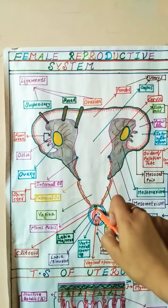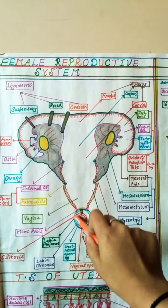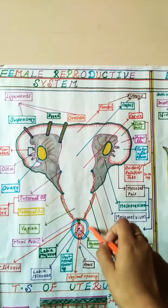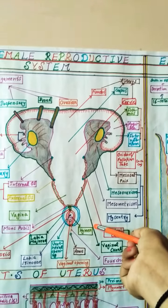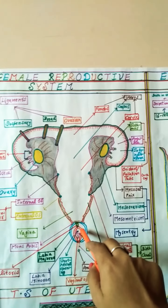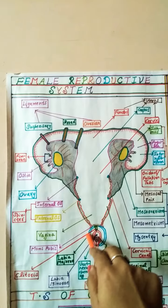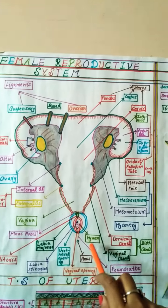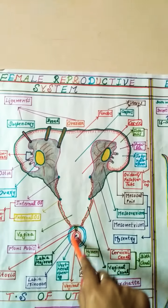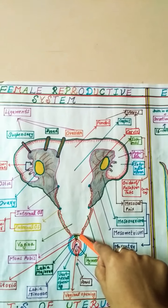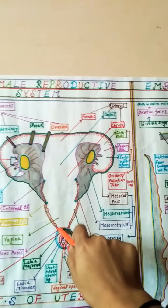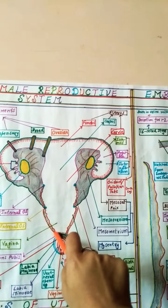The vaginal opening is called the vulva. The structure guarding the vaginal opening is called the pudendum or external genitalia. The vulva consists of the labia majora, which are the upper folds or upper lips, and the labia minora, which are hidden by the labia majora. At the upper portion of the labia majora there is an elevated fleshy structure covered by hair called the mons pubis.